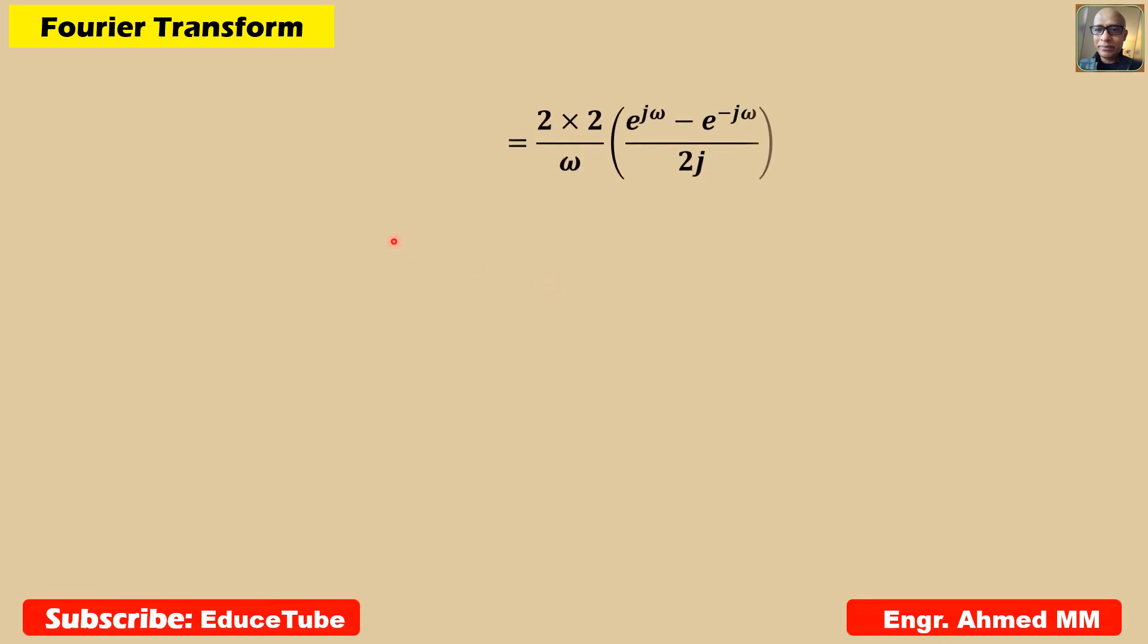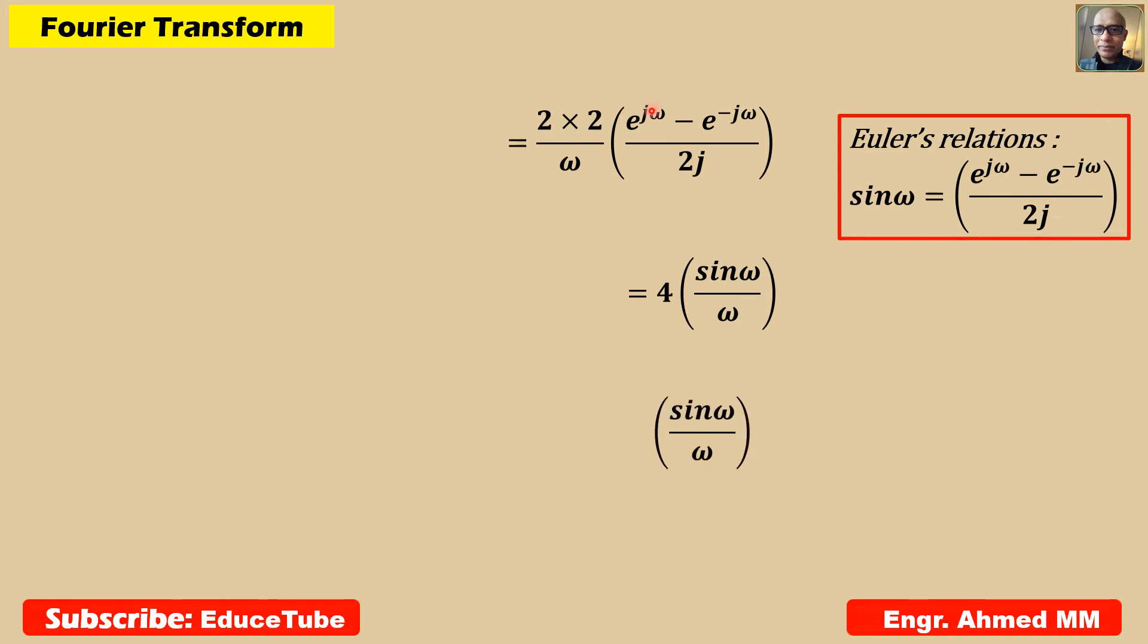Using Euler's relation, this part can be written as sine omega. The term becomes 4 times sine omega over omega. This is the Fourier transform.